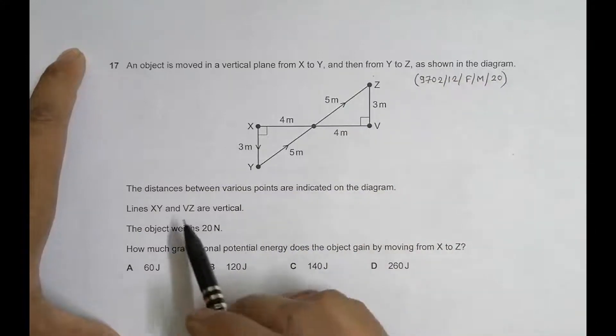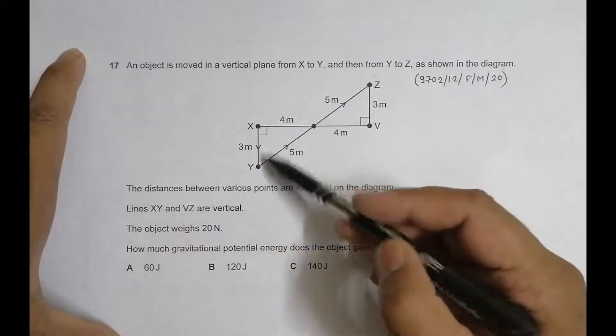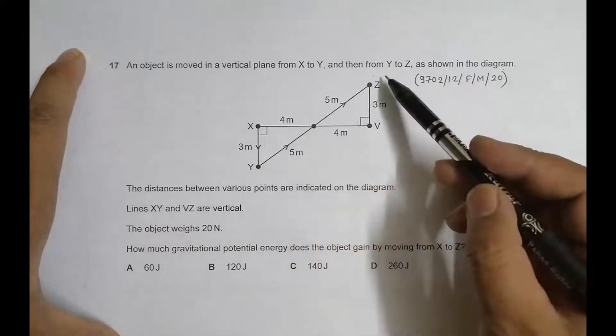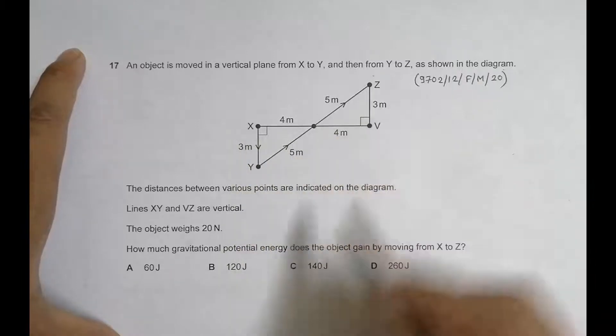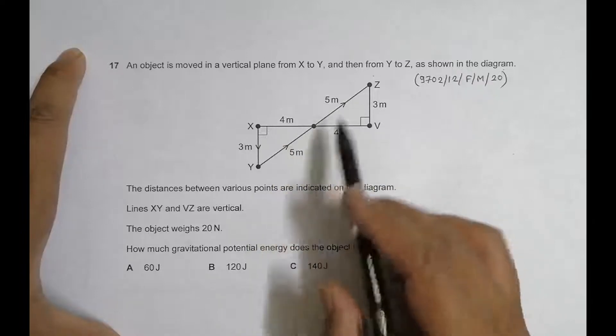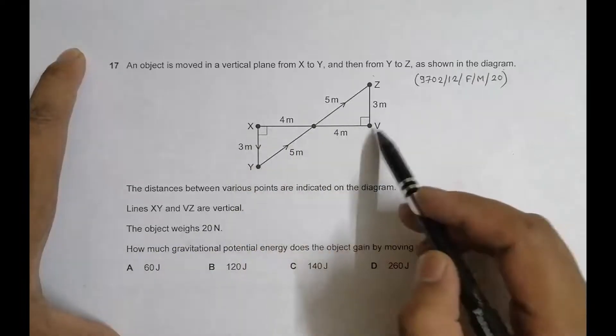As shown in the diagram, the distances between various points are indicated on the diagram. We have XY equal to 3 meters, X to Z is 5 plus 5, 10 meters, X to V is 4 plus 4, 8 meters, and so on. They look like two congruent triangles.